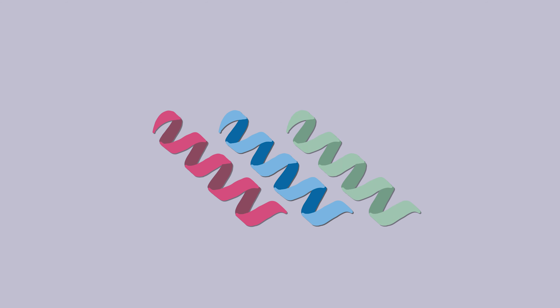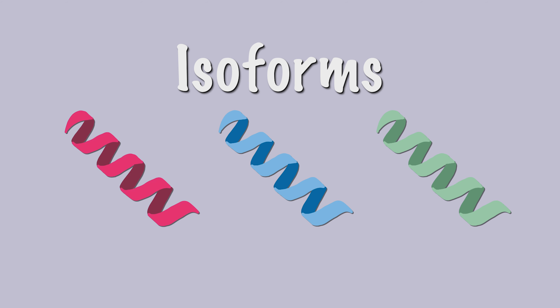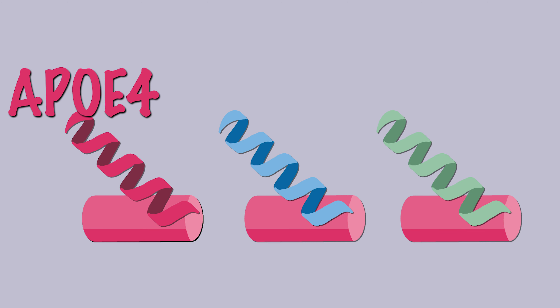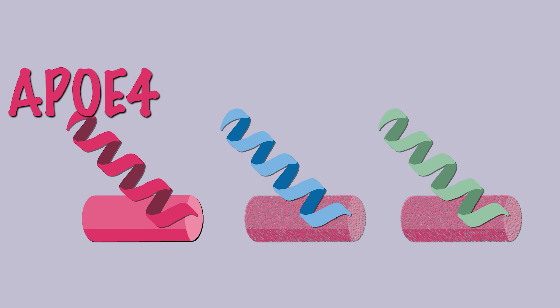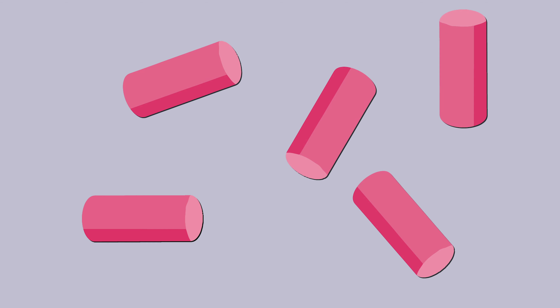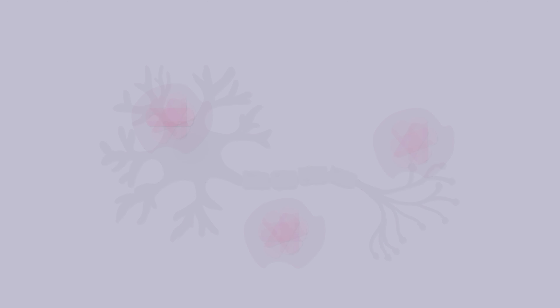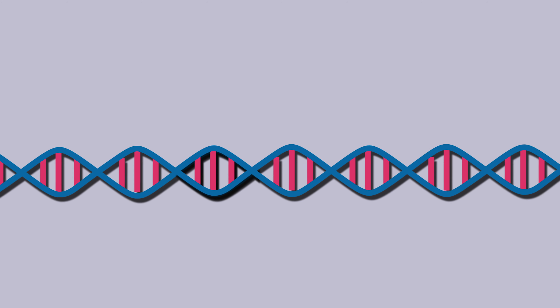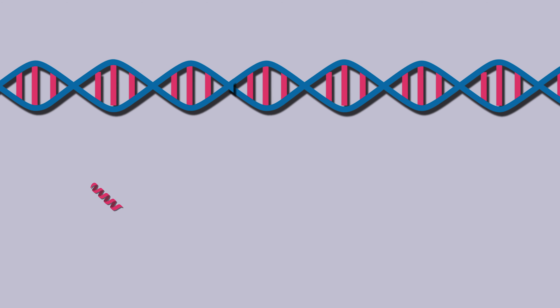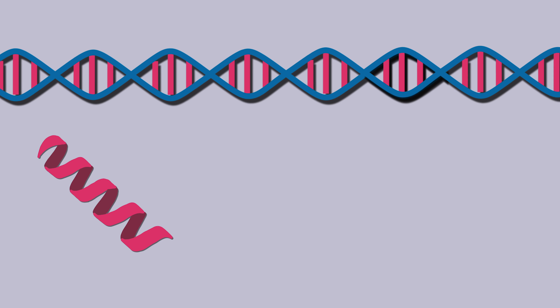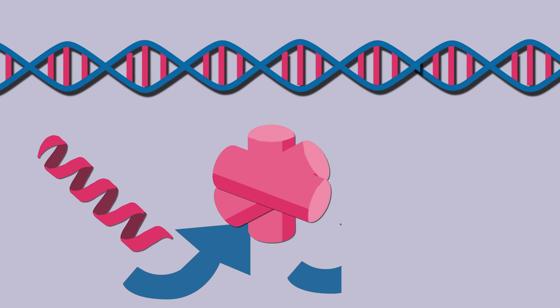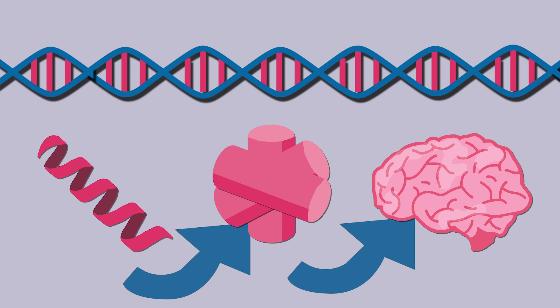The genome of any given individual can contain one of three isoforms, or variations, of APOE. Of these isoforms, APOE4 is the least effective at cleaving beta-amyloid. Beta-amyloid accumulates due to its chemical stickiness, resulting in protein aggregates and plaque formation. These plaques damage neurons and lead to cell death. Having the APOE4 gene is an example of a genetic risk factor — its expression increases the likelihood of beta-amyloid aggregates, thereby increasing the risk of developing Alzheimer's disease.